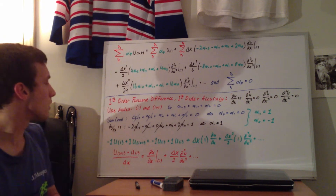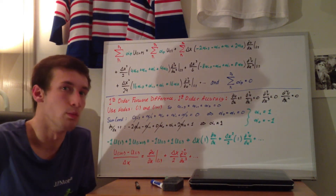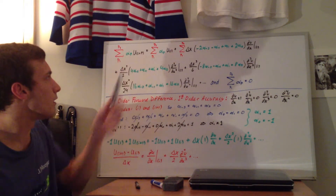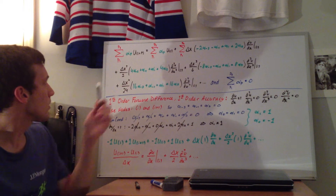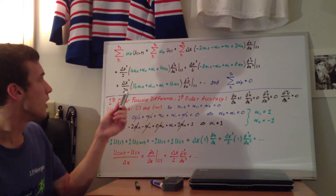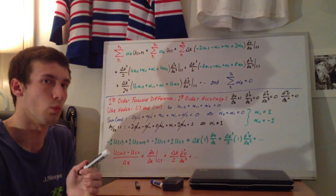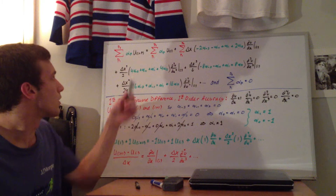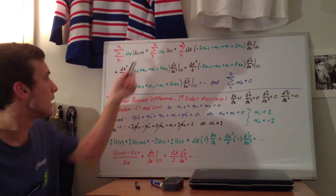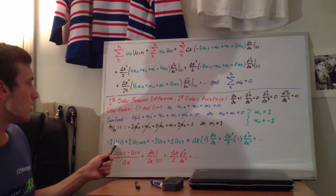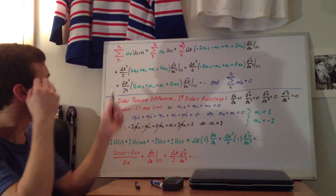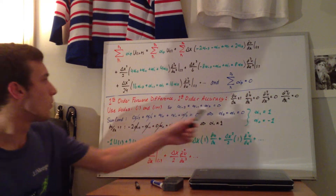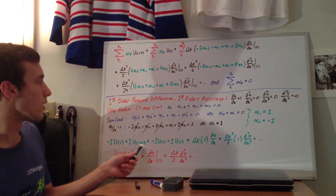We're still summing from p1 to p2, but the terms for p = -2, -1, and 2 drop out because their alphas are zero. For p=0: alpha_0 · u_{i+0} = (-1)·u_i. For p=1: alpha_1 · u_{i+1} = (+1)·u_{i+1}. So the left-hand side gives us -u_i + u_{i+1}.